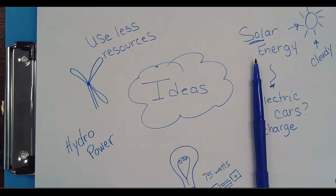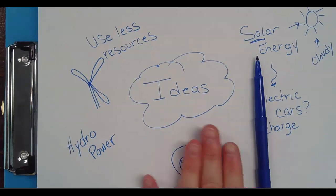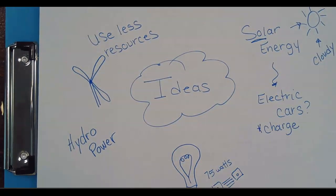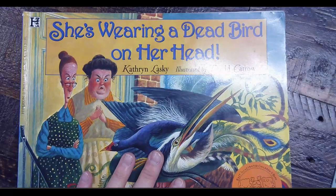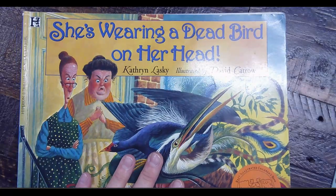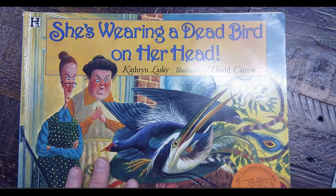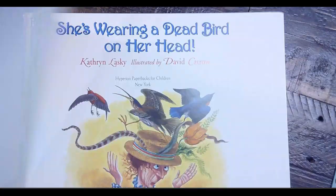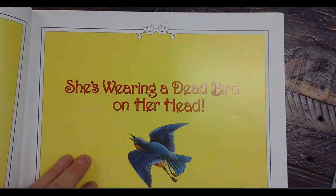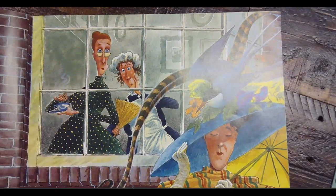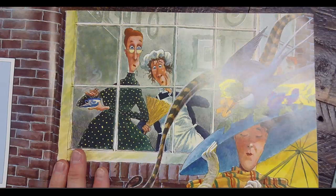Now we're going to move over, read a book, and then chat about it. The book is 'She's Wearing a Dead Bird on Her Head' by Kathryn Lasky, illustrated by David Catrow.